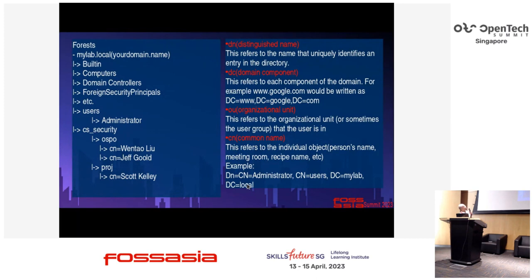This is a preview of my AD configuration. You can see on the top is the forest, and below that is your domain name. In your configuration, you should change the domain name to your own domain. You can see at the top of the tree there is an organization unit called CS_Security, which is my organization unit in the server. There are some entries.